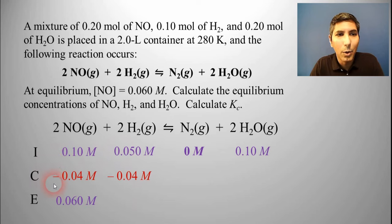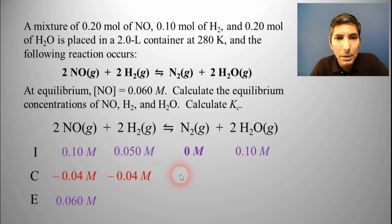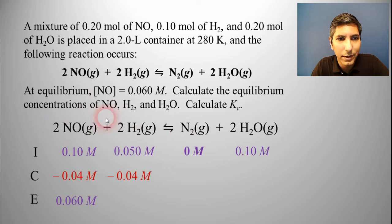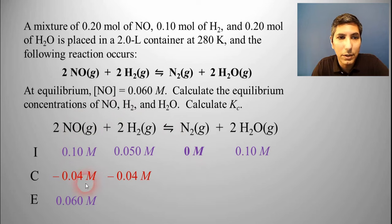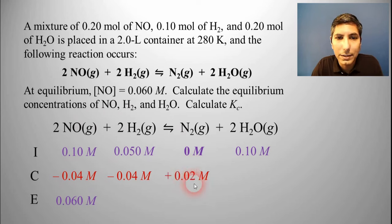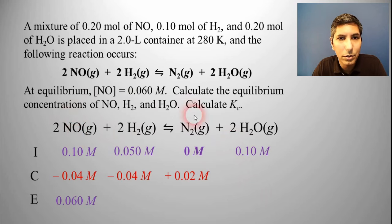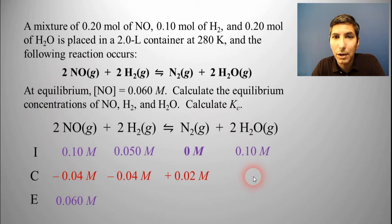If the reactants are going down, the products have to be going up, so the values on the right side will be plus something. For N2, notice that the mole ratio is two to one — two NOs for one N2. So whatever the change is for NO, the absolute value is going to be half that for N2. If this is 0.04, this is going to be 0.02 because it's half the coefficient, but since it's on the other side of the arrow, this is plus 0.02. For water, the mole ratio is two to two, so its absolute value is the same — 0.04 — but since it's a product, it's going up, so this is plus 0.04.